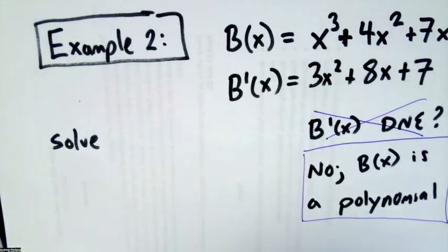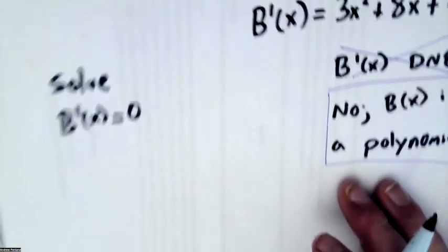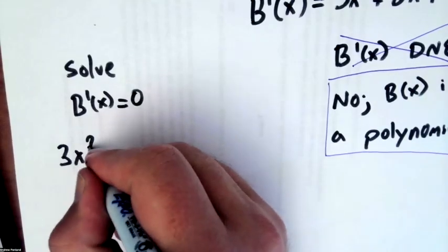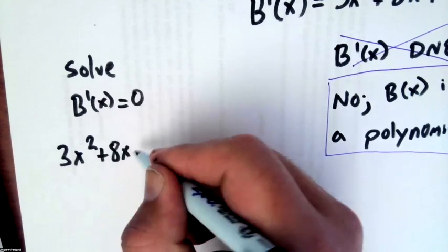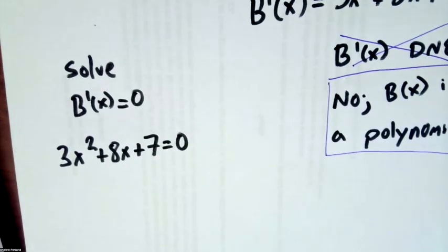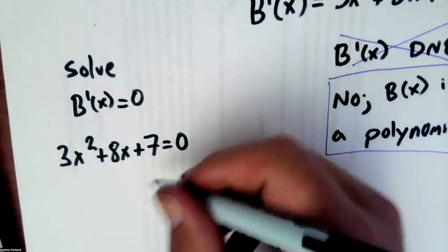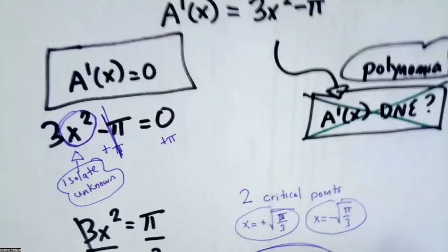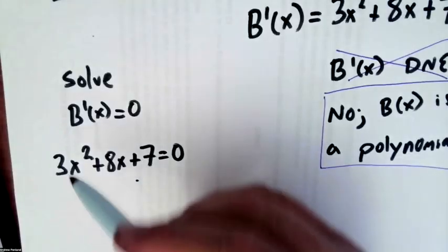Now I need to solve B prime of x is equal to 0. So I'm going to have 3x squared plus 8x plus 7 is equal to 0. Now I don't know if you're thinking this, but often students will think, okay, I want to subtract by 7. You know why you don't?